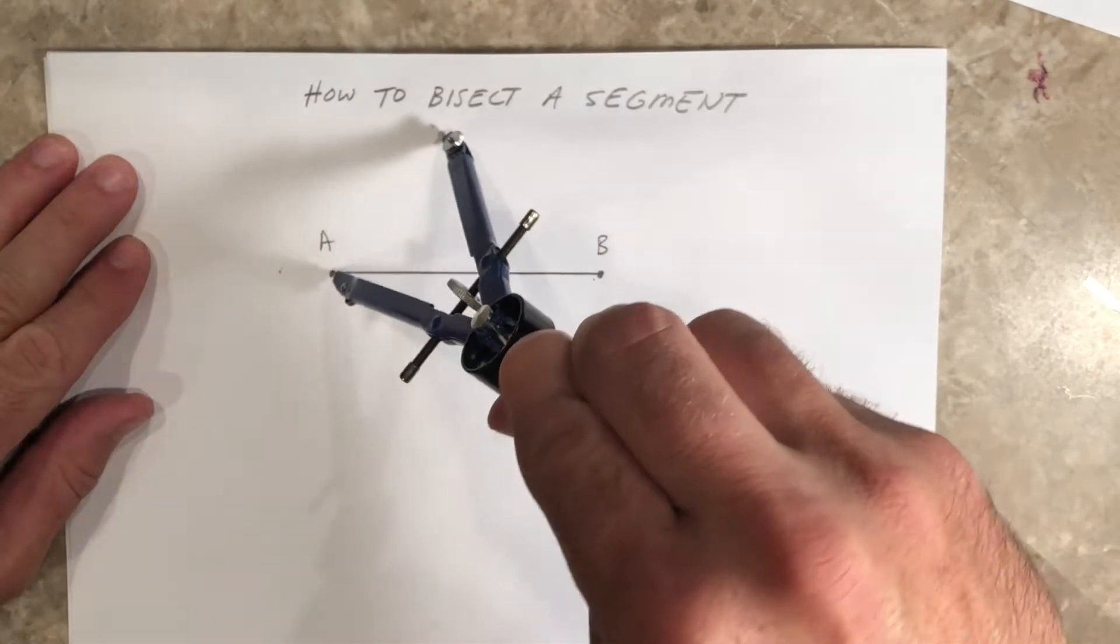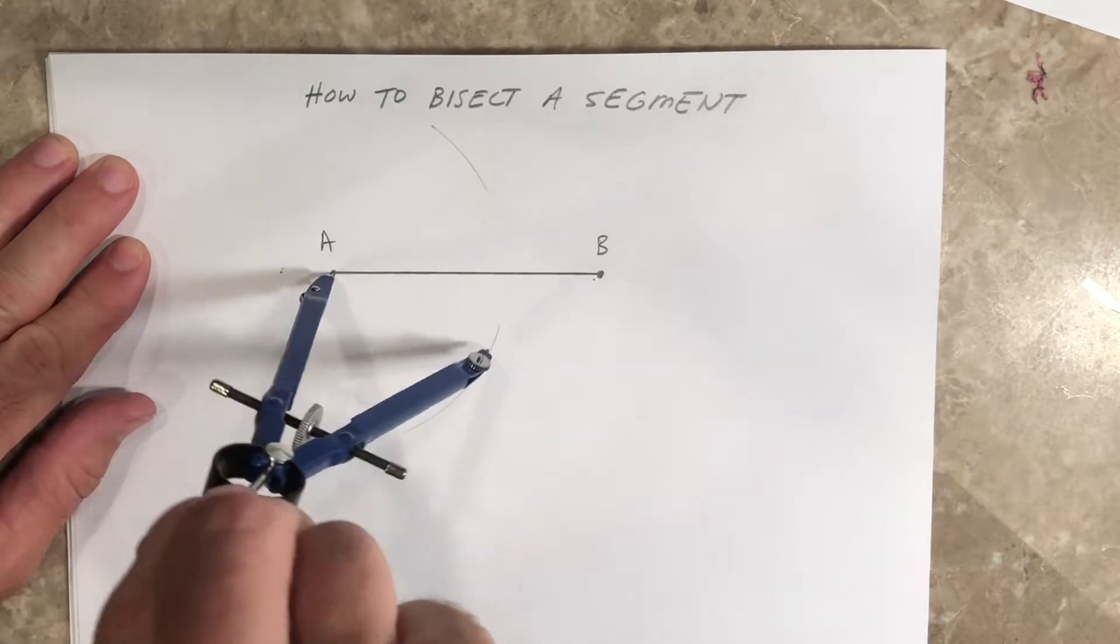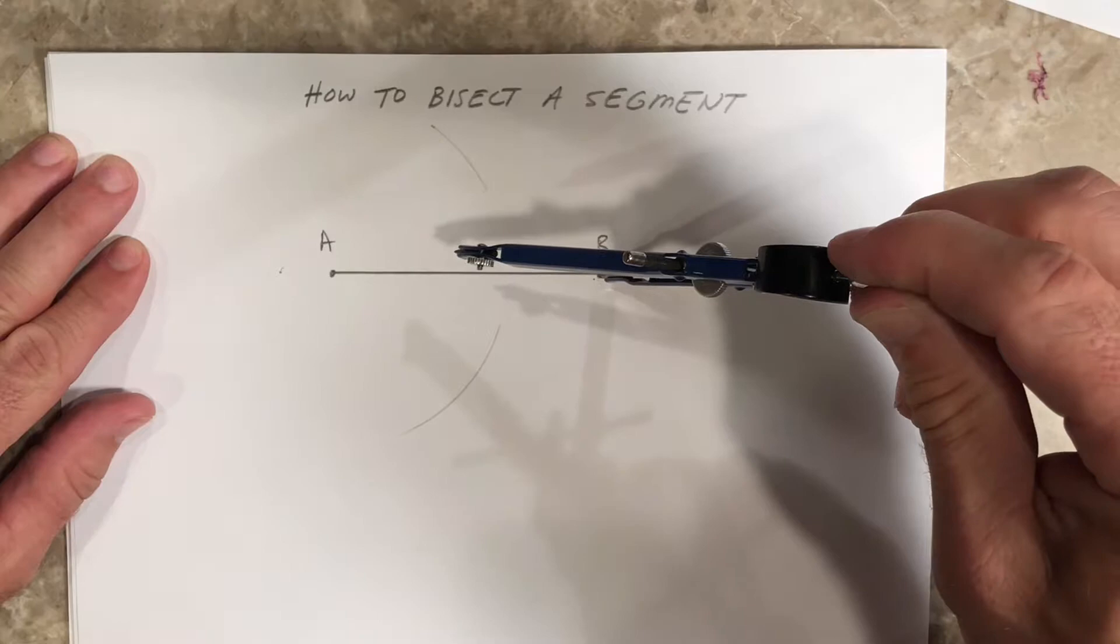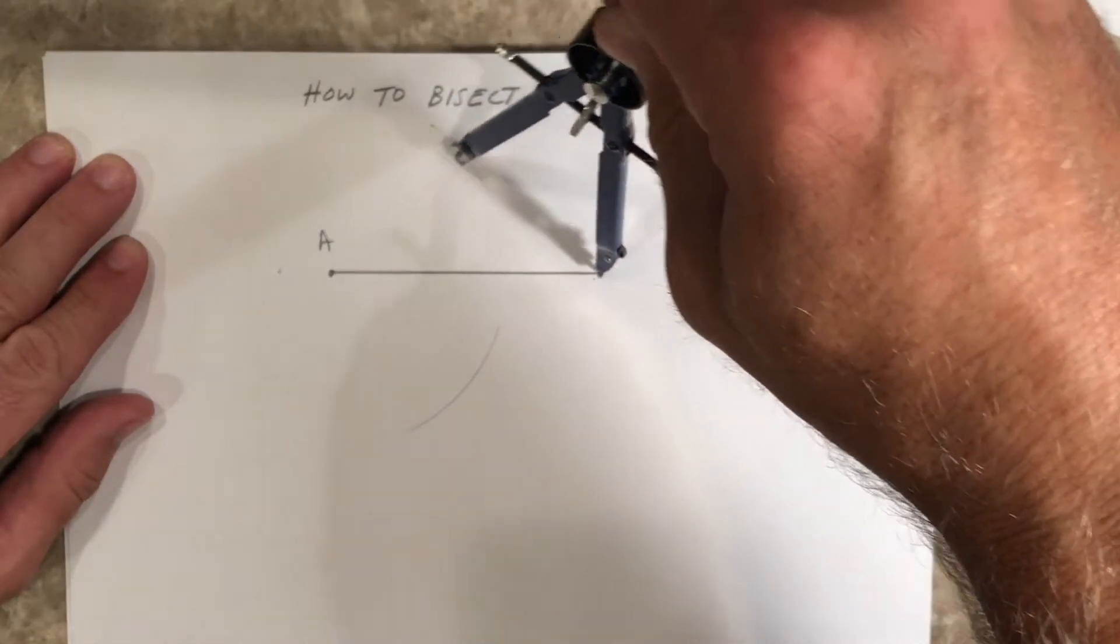I'm going to swing an arc up here at the top and an arc down here at the bottom. Then you're going to walk your compass to the other side, not changing the size at all, put it at B, and swing an arc the other way.